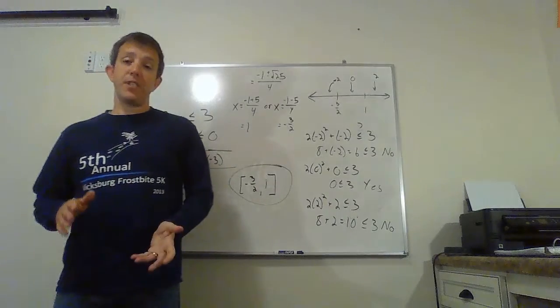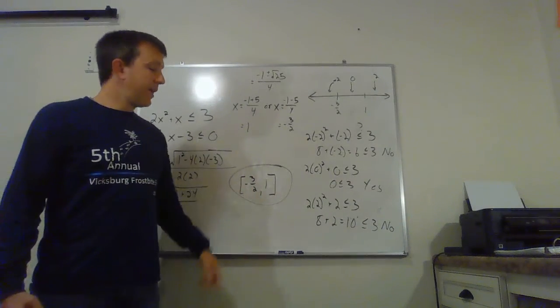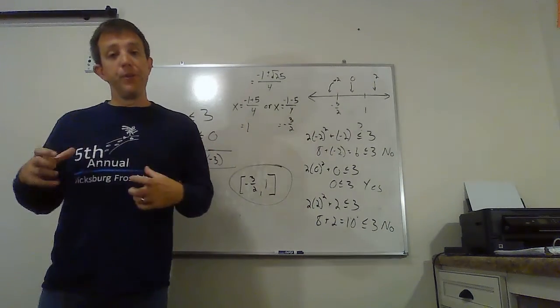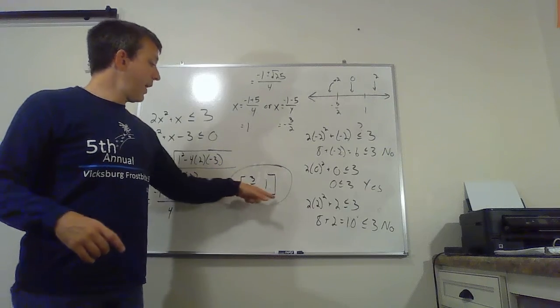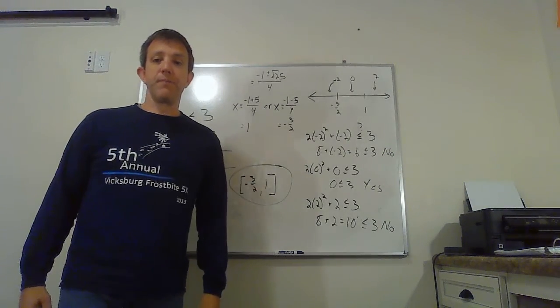So the interval that works is this one in the middle, all the x values sandwiched in between negative three halves and positive one. So it's that interval from negative three halves to one. This time, since we had less than or equal to, we get to include those endpoints. So I use brackets instead of parentheses. So there you go. Thanks for watching the video. Have a good day.